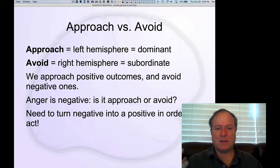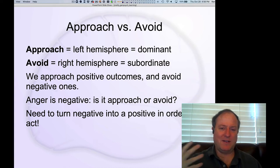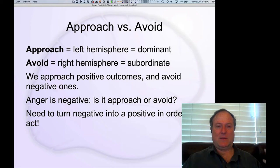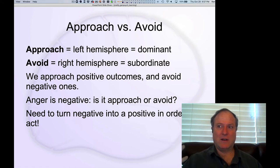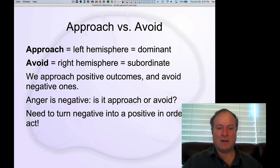The basic logic is that if you have a positive outcome, you want to approach it, and if you have a negative outcome, you want to avoid it. One key thing about avoidance is it's hard to know when you've successfully avoided a negative outcome, because if you avoid it now, you don't know if you'll continue to avoid it. That turns out to be really critical for OCD — obsessive compulsive disorder — as we'll look at later in the disorders chapter.